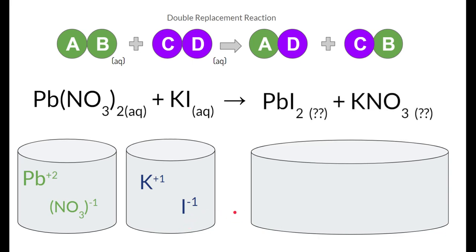This lead right here is going to come over and attach to this negative-1 iodine. We always attach positives to negatives. So that lead and the iodine are going to come together. Now I already gave you the answers up here. Notice this lead is a positive-2 charge, and the iodine is a minus-1 charge. Therefore, when we put them together, there needs to be one lead and two iodines.